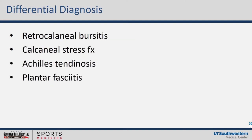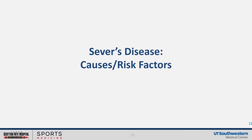Some differentials to keep in mind when examining a skeletally immature patient with heel pain: retrocalcaneal bursitis, a calcaneal stress fracture, an os trigonum — which is an accessory ossicle that can sometimes live in the posterior aspect of the ankle — tendinosis, or plantar fasciitis. These are some of the differentials to keep in the back of your mind.